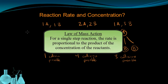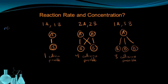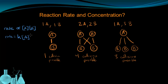We can write that by saying the rate is proportional to the concentration of A times the concentration of B. We can change this proportion to an equality by saying the rate equals a constant of proportionality K times [A] times [B]. This statement is called a rate law. It says the rate of reaction equals K — the specific rate constant for the equation — times the concentrations of the reactants.